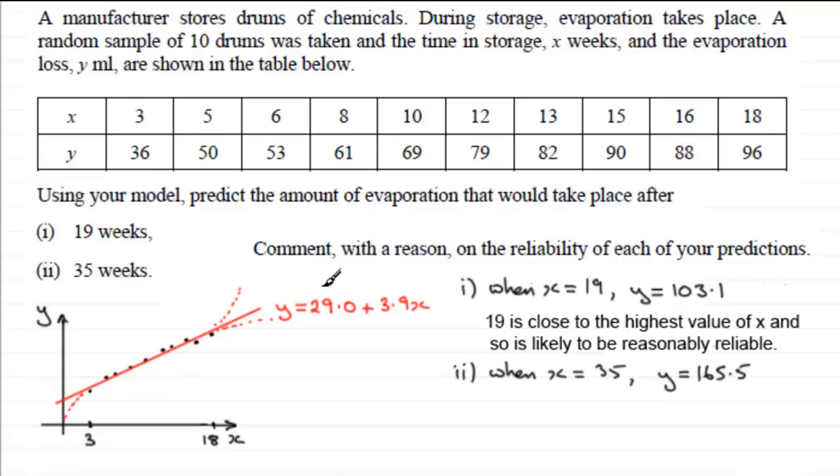Now this value would be on this line. But because it's outside of this range way outside of this highest value of 18 then I can't be sure that this is going to be a reliable prediction. Because the curve might go up like this or it might tail off.